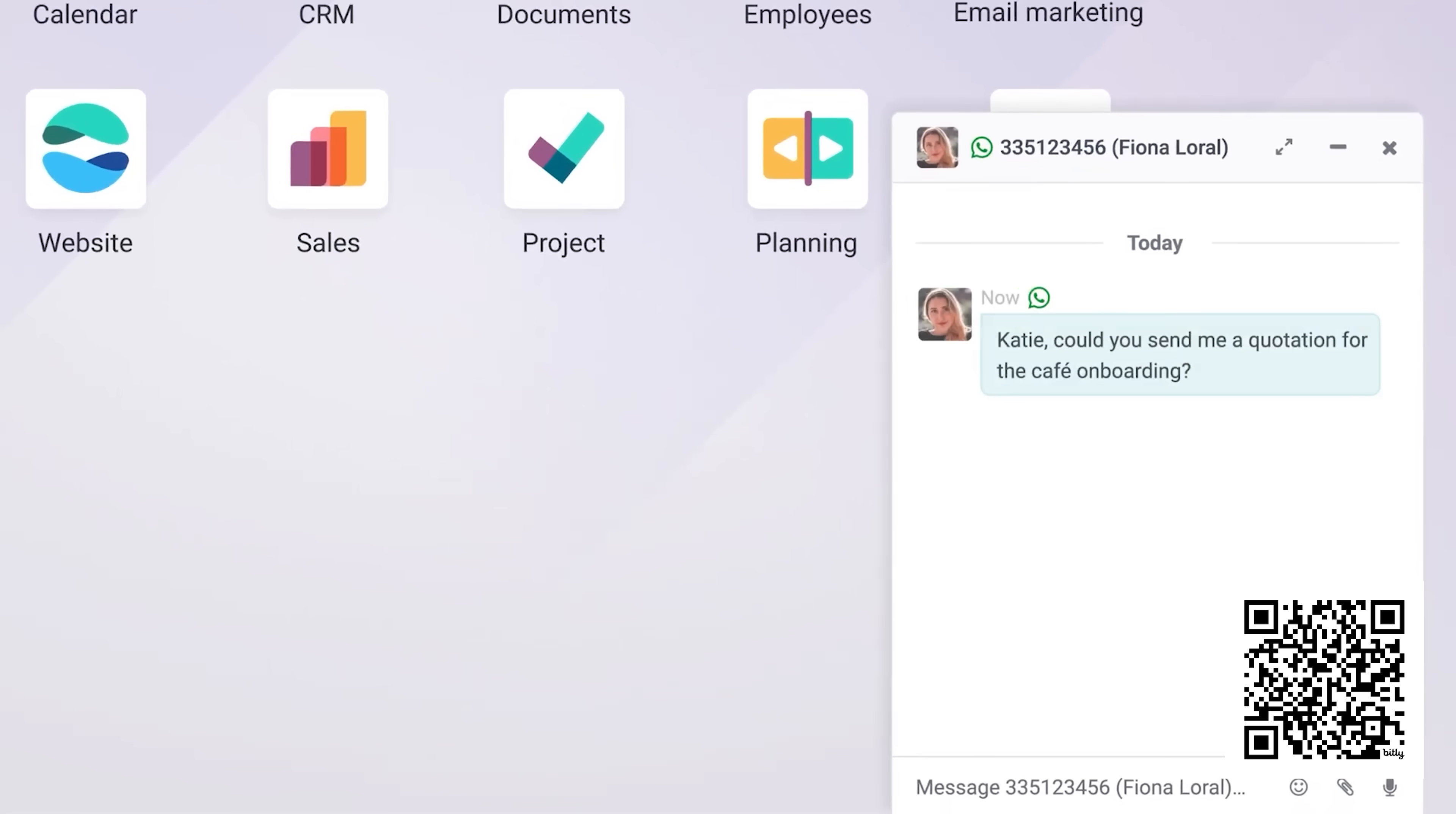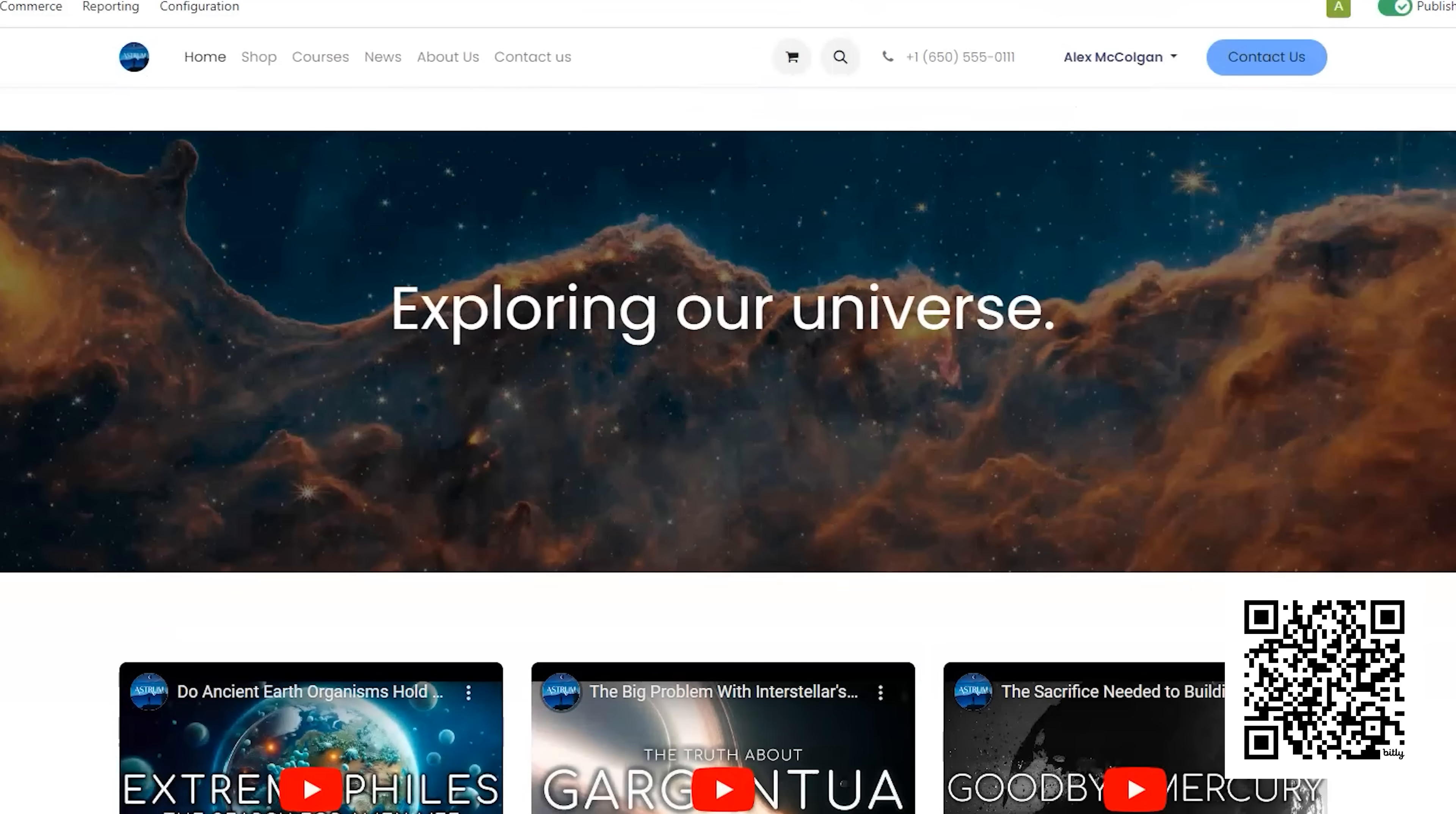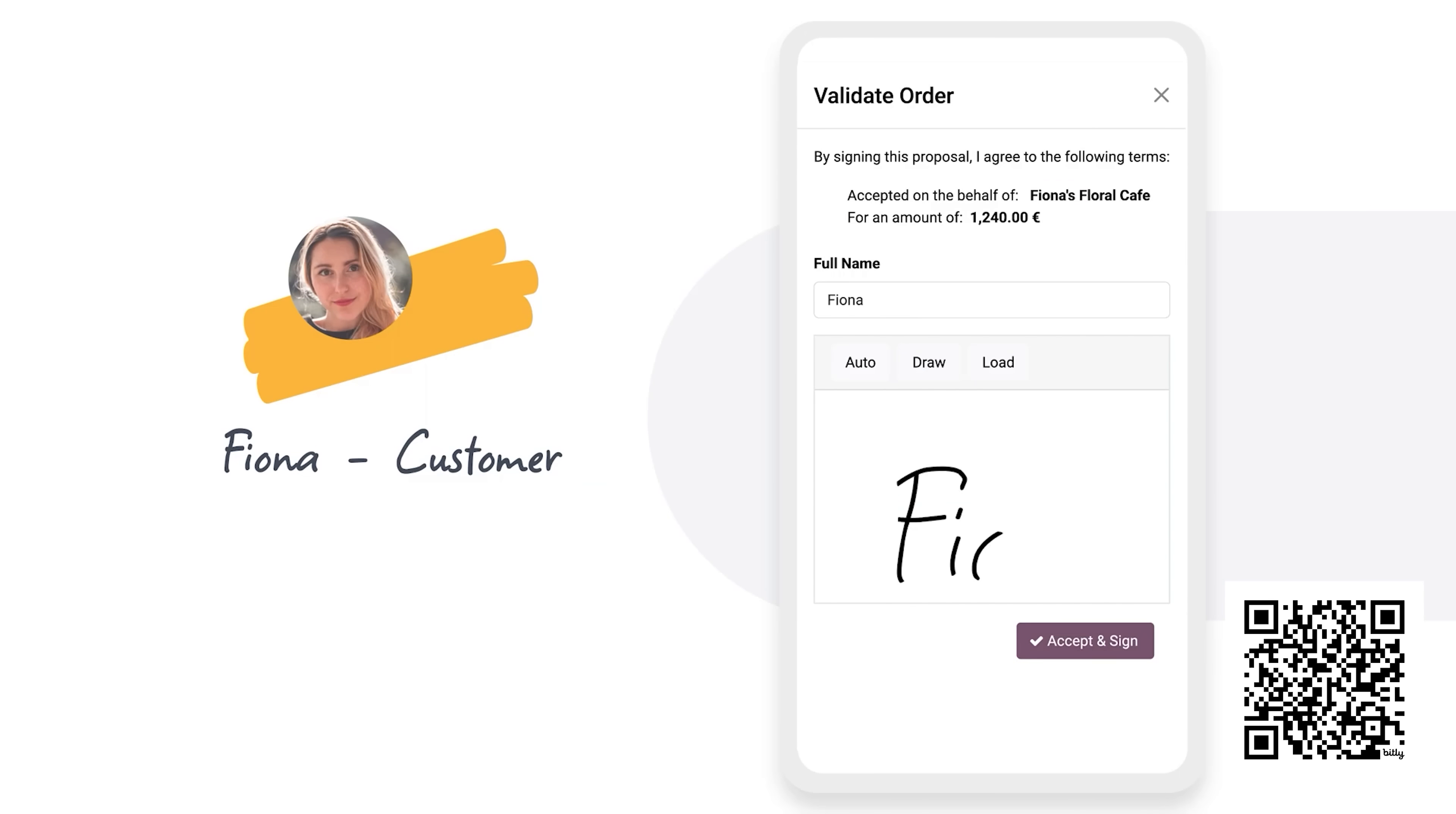Odoo is a business platform that has all the apps you need to run a business, from sales, to accounting, to building a website. The best part is they're all connected. Getting a document signed in one app will instantly update the others.